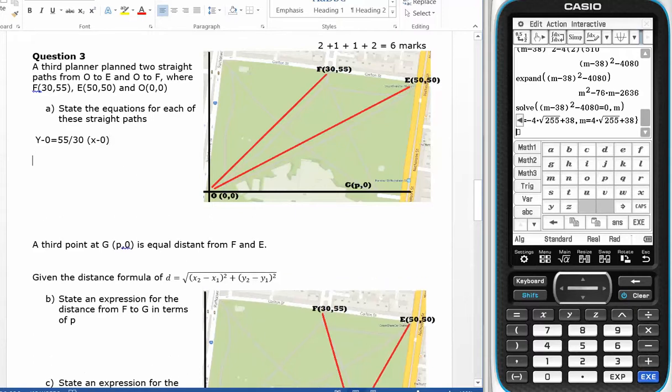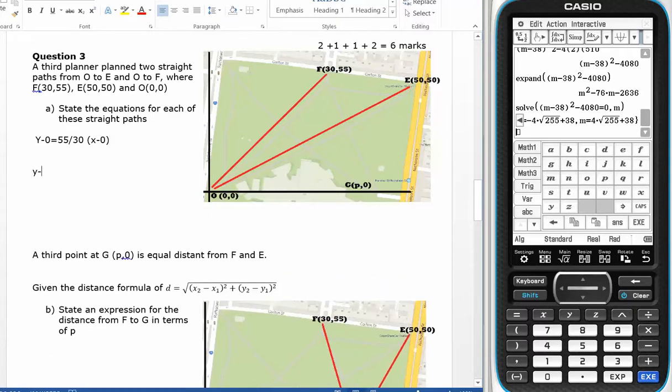And the second equation will be y minus zero equals, and the second equation rises 50 and runs 50, so it's going to be 50 divided by 50, times x minus zero. And I'll put that into a calculator.